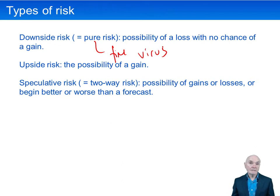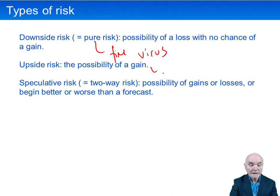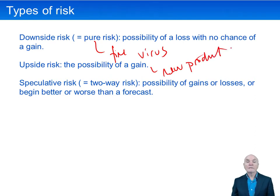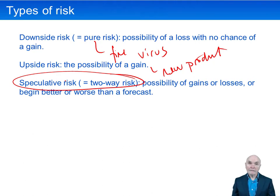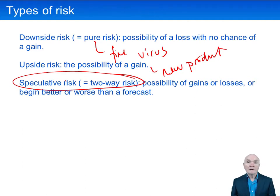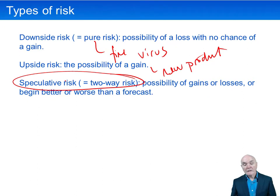Upside risk is a possibility of a gain — for example, when you launch a new product with the hope that it will sell well. By far the most common form of risk is speculative risk, where things can go both ways: shares could go up or down, foreign currency can become more or less valuable, a new product could go well or badly.